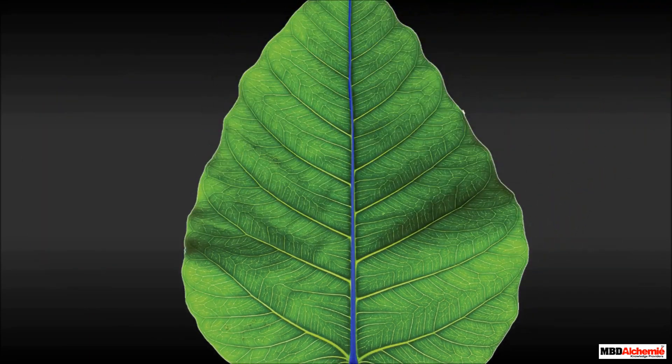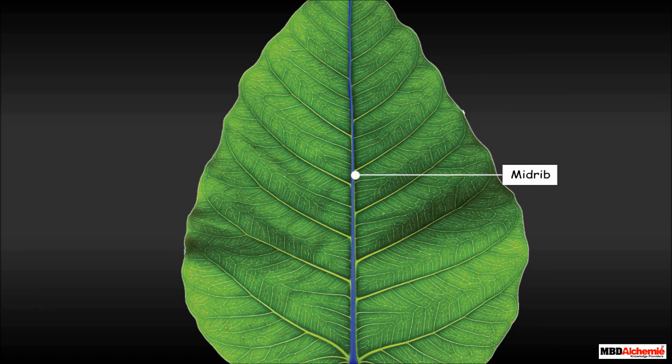A thick line runs through the center of a leaf towards its tip. This is the central vein, also known as the midrib.